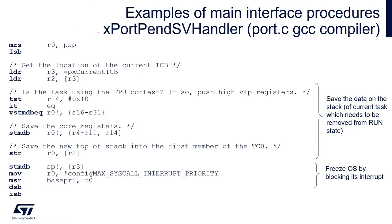Let's have a look at what is happening within the PendSV interrupt handler. This handler is present within port.c file as xPortPendSVHandler. Within this function, the scheduler moves the currently executed task from run state to ready state and selects another task to be in run state. It starts by storing the data of the current task on its stack. At the beginning, it saves the current process stack pointer in R0 - the top of the stack of the current task. Then it reads the address of the current task TCB and stores the top of its task stack into R2. Then the scheduler checks whether the task being removed from run mode was using the FPU by testing the R14 content.